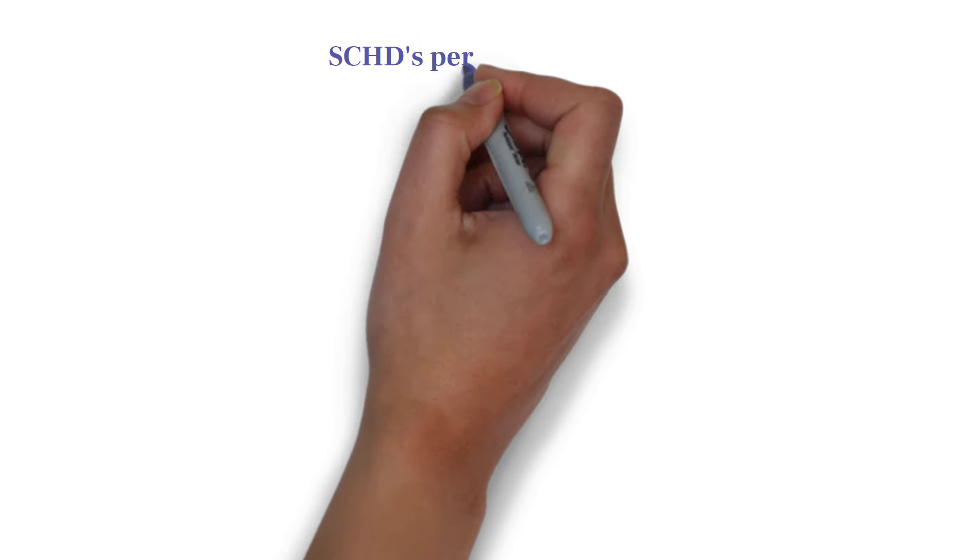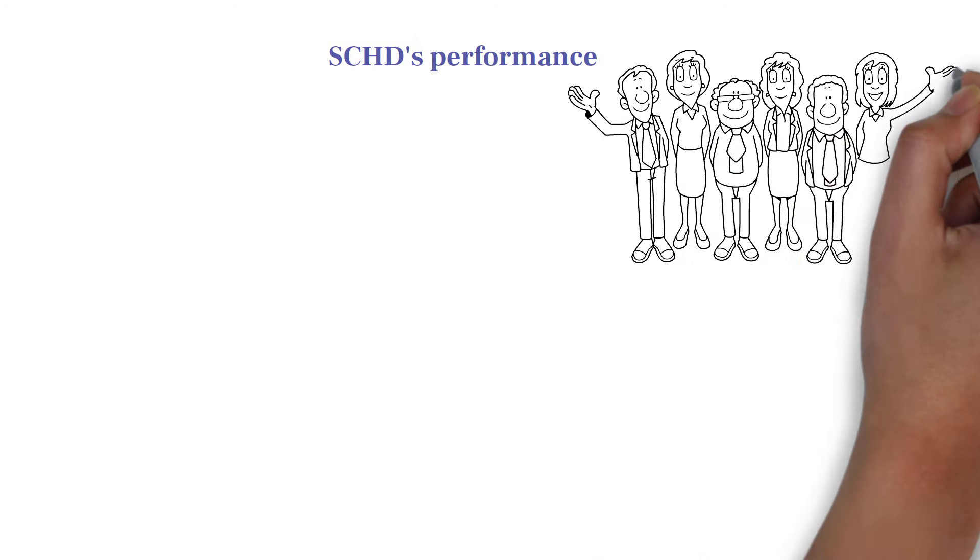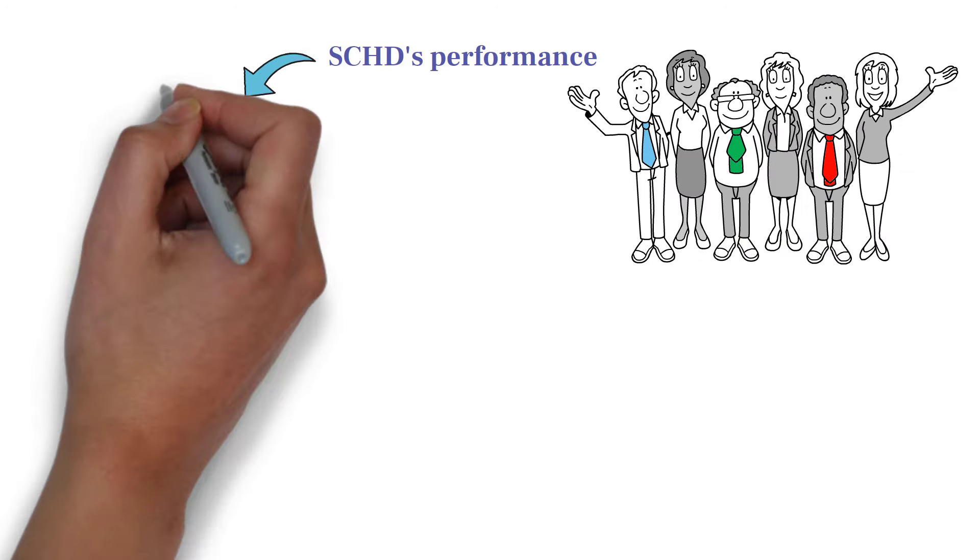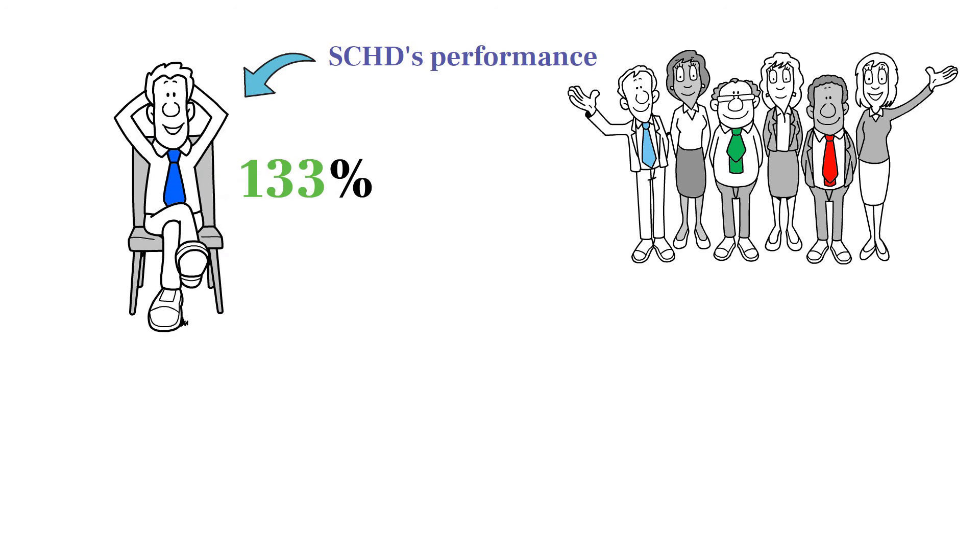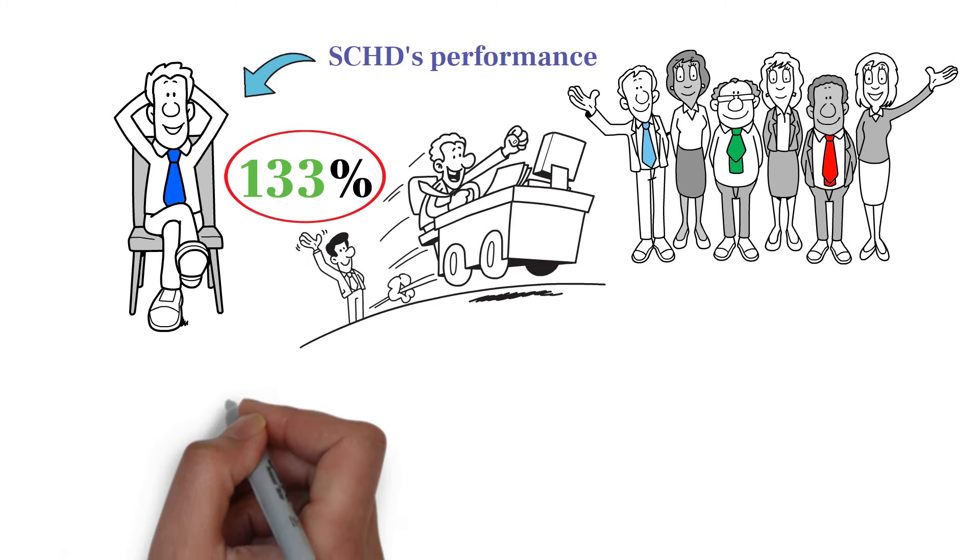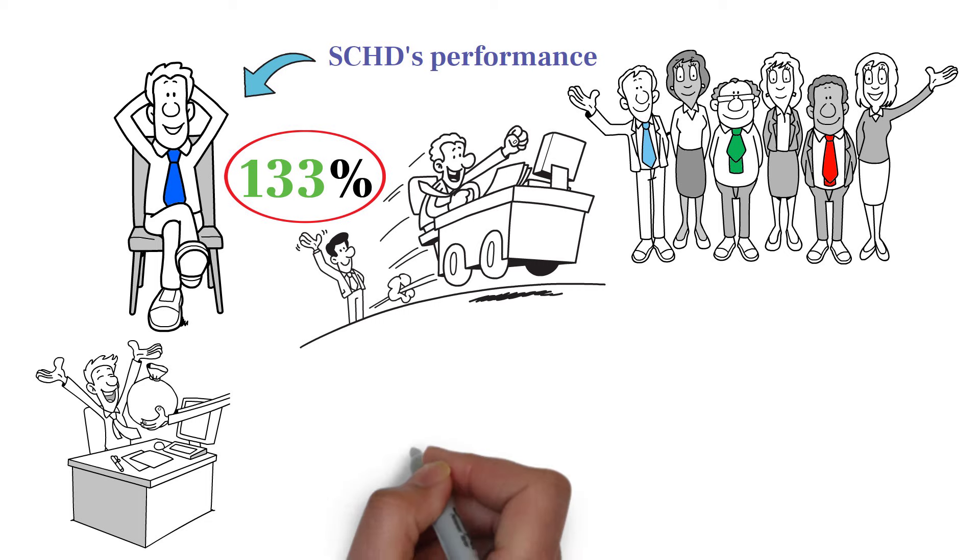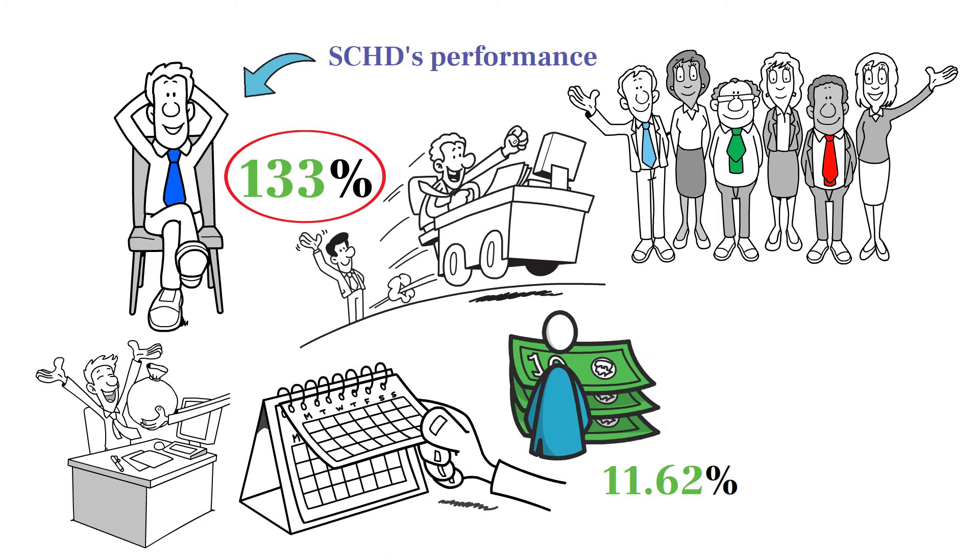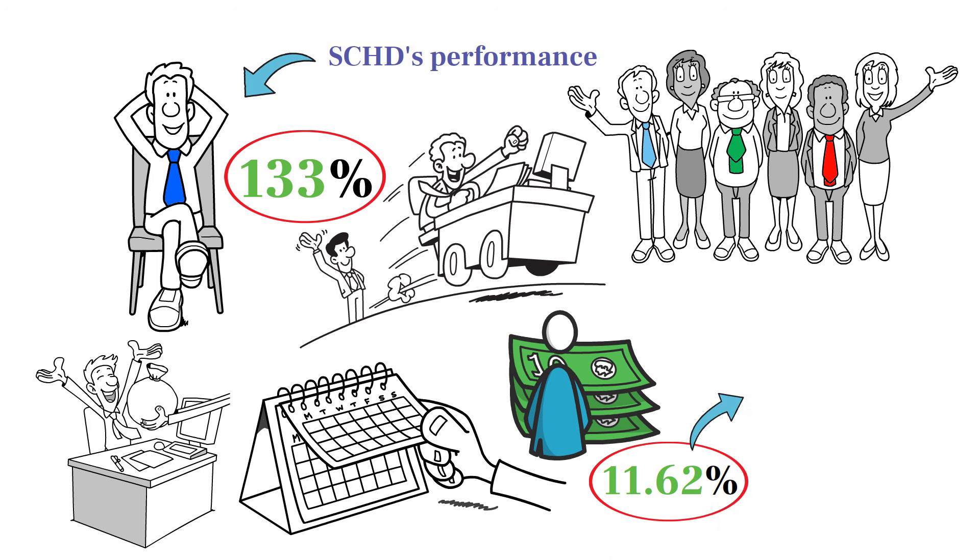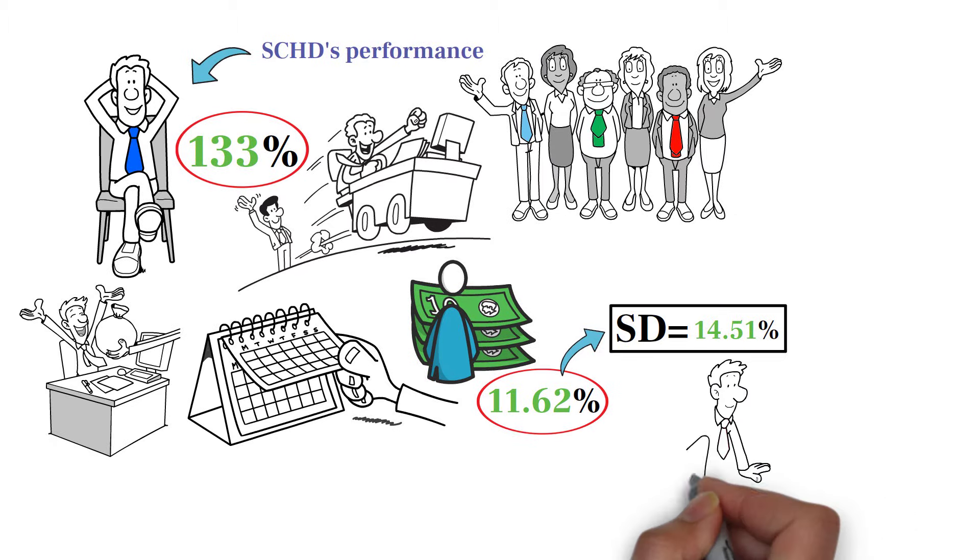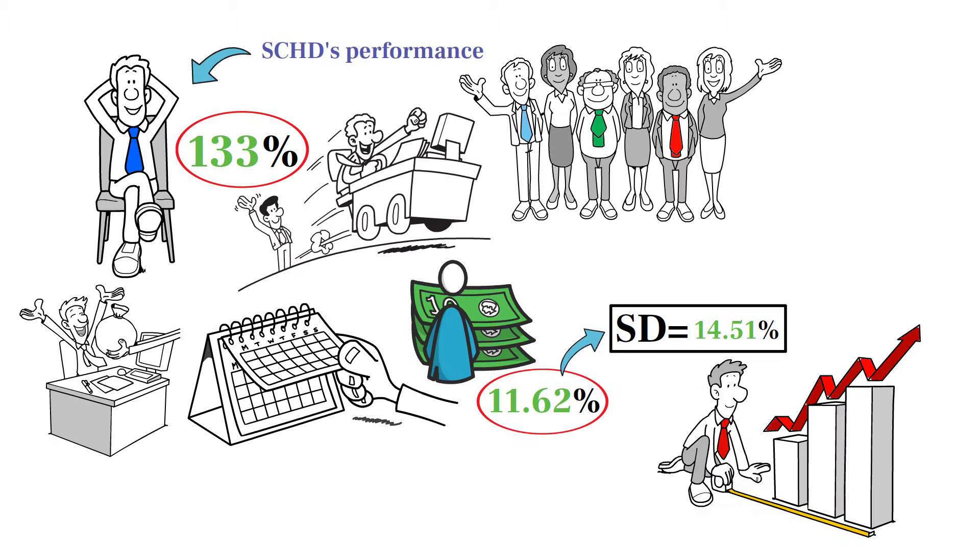Now, let's talk about SCHD's performance, one of the key reasons it has garnered so much attention from investors. Since its inception, SCHD has delivered an impressive average annual return of over 133%. This phenomenal performance highlights the ETF's ability to generate significant returns for its investors. Over the last 10 years, SCHD has achieved a compound annual return of 11.62%, with a standard deviation of 14.51%. This indicates a strong, consistent performance, providing both growth and stability.